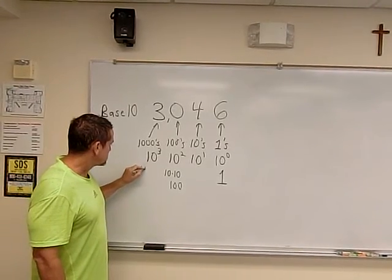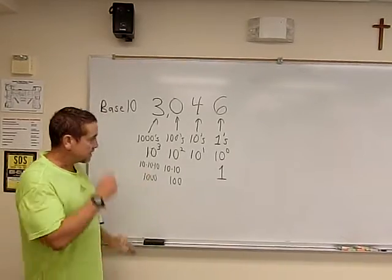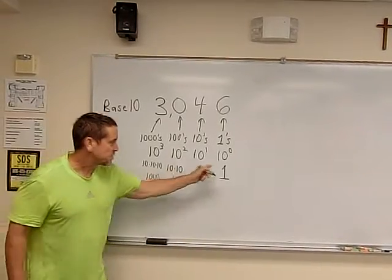And this is ten cubed, which is ten times ten times ten, which makes this the thousands place. So that's where these guys come from.